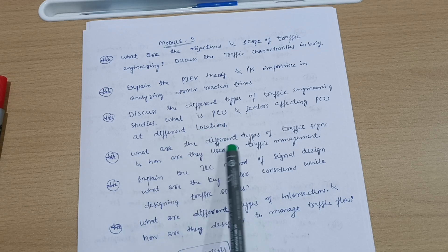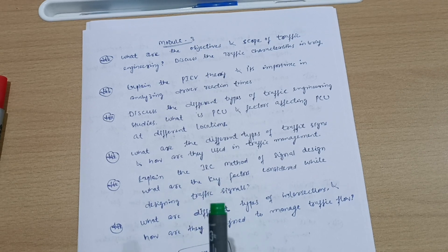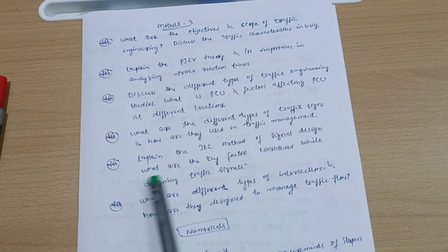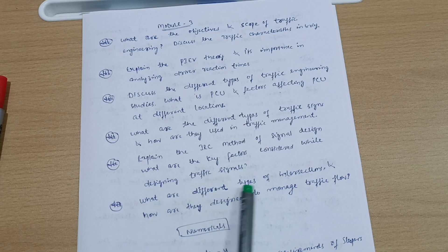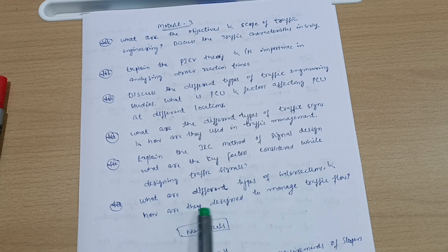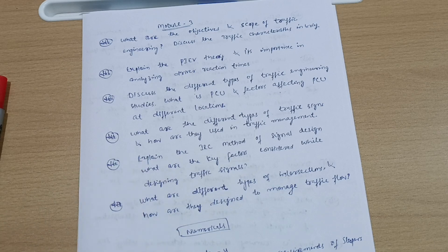What are the different types of traffic signs and how are they used in traffic management? Explain the IRC method of signal design. What are the key factors considered while designing traffic signals? What are different types of intersections and how are they designed to manage traffic flow? These are six questions from module third which you have to go through. The numerical part is according to your own convenience.